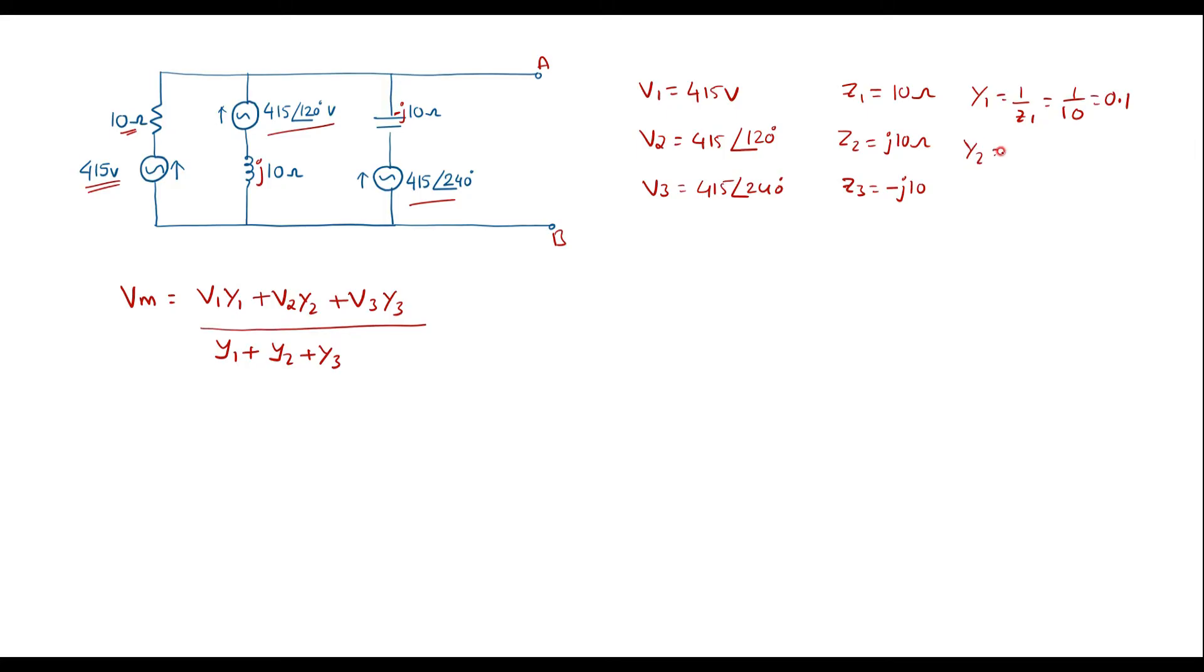Similarly Y2 is equal to 1 upon Z2 that is 1 upon J10 which is equal to minus J 0.1. Y3 is equal to 1 over Z3 which is 1 upon minus J10 is equal to plus J 0.1.